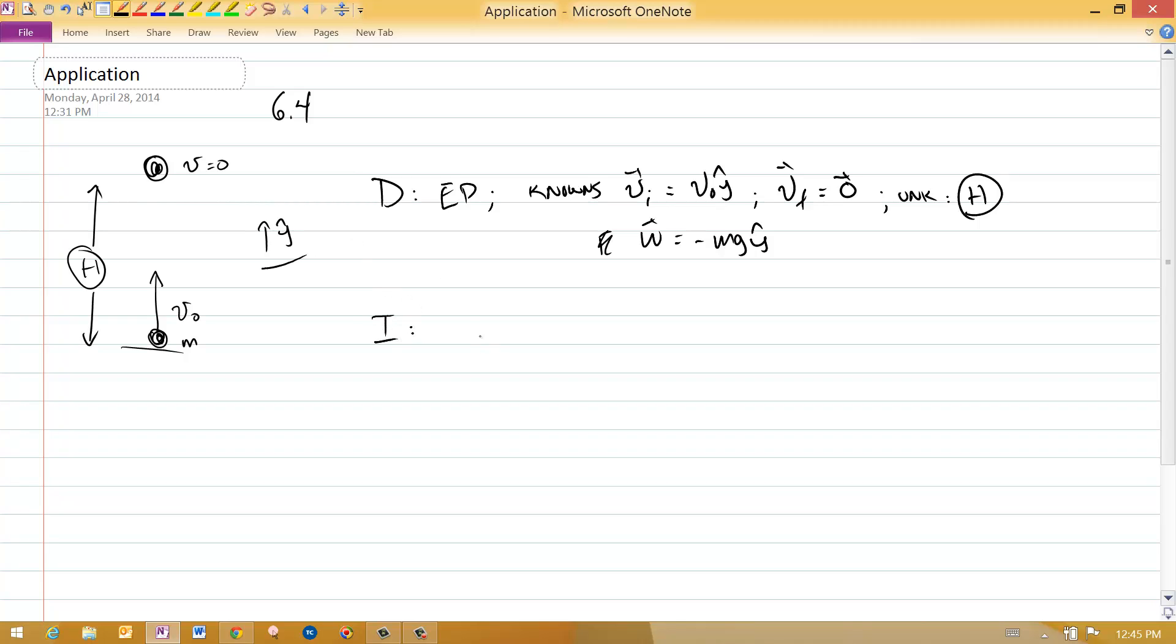Investigator says, let's start with what the system is. The system is the object. And then the surroundings. The only important thing in the surroundings here is the earth. The earth is the thing which is putting the force on the object, which is making the system change its momentum.